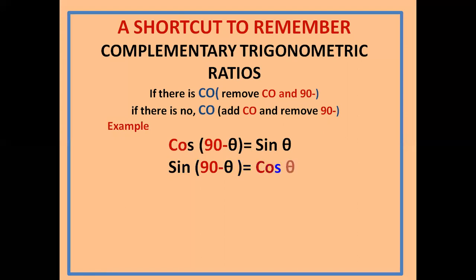The next is cot(90 minus θ): there is 'co', so remove 'co' and '90 minus'. Then you get tan θ.